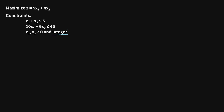This is what makes this problem different than a regular linear programming problem. We're saying that whatever values of x1 and x2 maximize this function, they have to be integers — they can't be decimals. The way we go about solving this using the branch and bound method is we temporarily relax this integer constraint and just solve the linear programming problem while ignoring it.